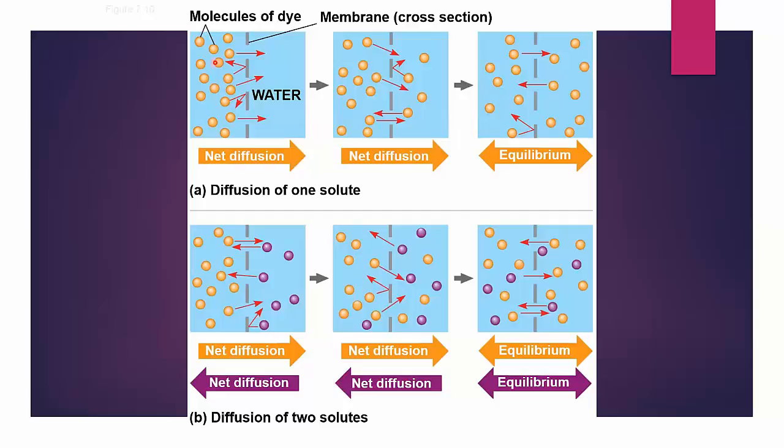So in diffusion items diffuse from areas of high concentration to areas of lower concentration. Once equilibrium is reached, that does not mean the molecules stop moving. It just means they're spread out equally.